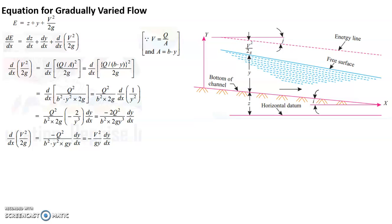Now we have the term called minus 2 Q square by B square 2gy cube into DY by DX. We are considering substitution for D by DX of V square by 2g. And we have the substitution for D by DX of V square by 2g as minus V square by GY into DY by DX.